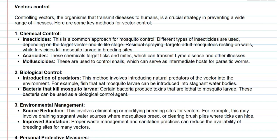Acaricides are mainly used to control ticks and mite populations associated with the transmission of Lyme disease and other illnesses. Molluscicides help to control snails, which are associated with the passage of pathogens — mainly certain parasitic worms — that cause schistosomiasis conditions.